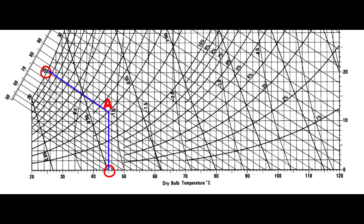Air is heated, and as we know, heating can be shown on a psychrometric chart as a horizontal line. So we have the temperature of the air increasing as the air moves through the heater to a dry bulb temperature of 95 degrees Celsius, and that is identified as point B.